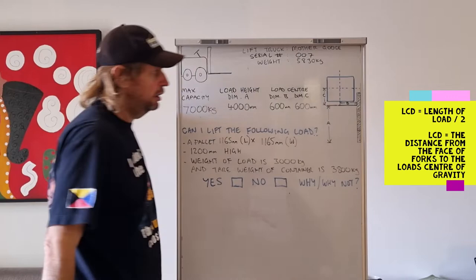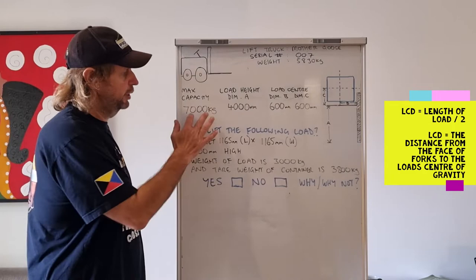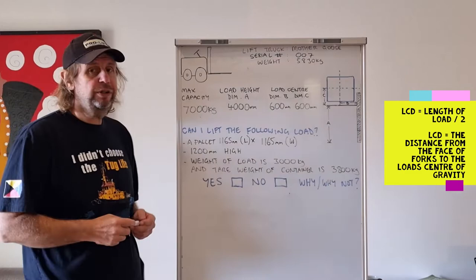Now the maximum load center distance you can have on this fork is 600 millimeters. If you exceed that, the forklift will tip over. If you exceed this maximum rated capacity, the forklift will tip over. And if the forklift is over, you're in a world of trouble.